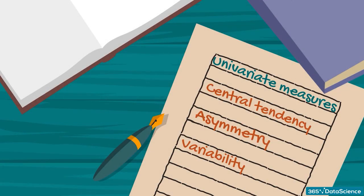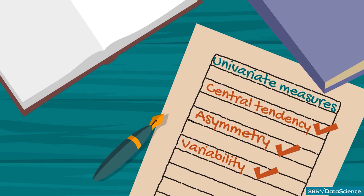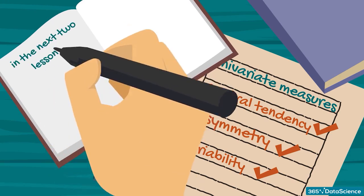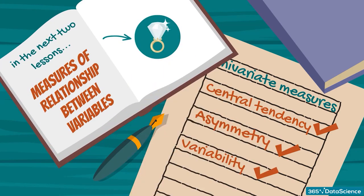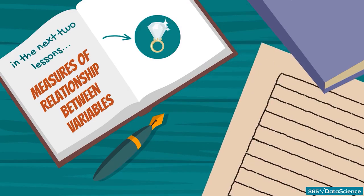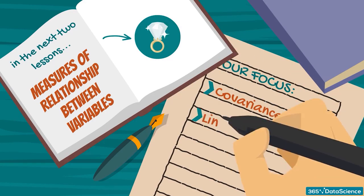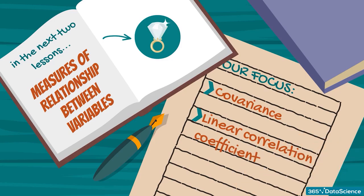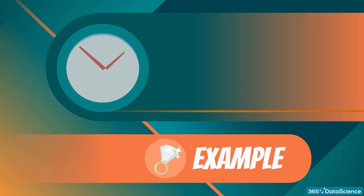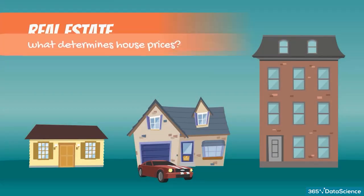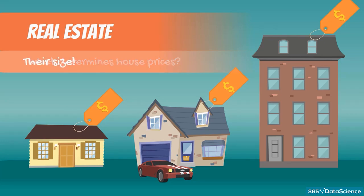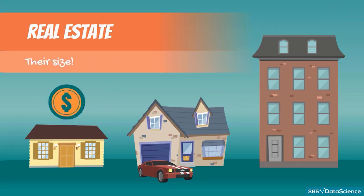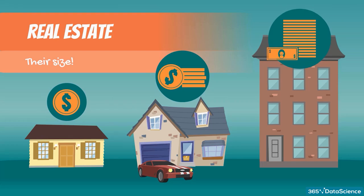We've covered all univariate measures. Now it is time to see measures that are used when we work with more than one variable. In the next two lessons, we'll explore measures that can help us explore the relationship between variables. Our focus will be on covariance and the linear correlation coefficient.